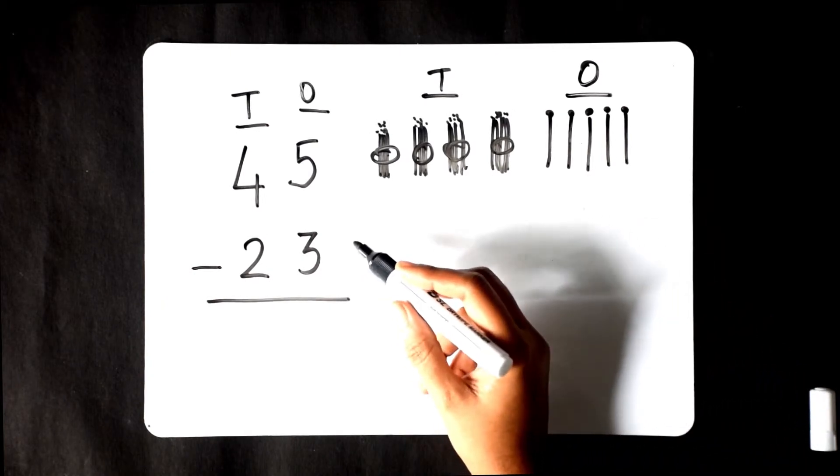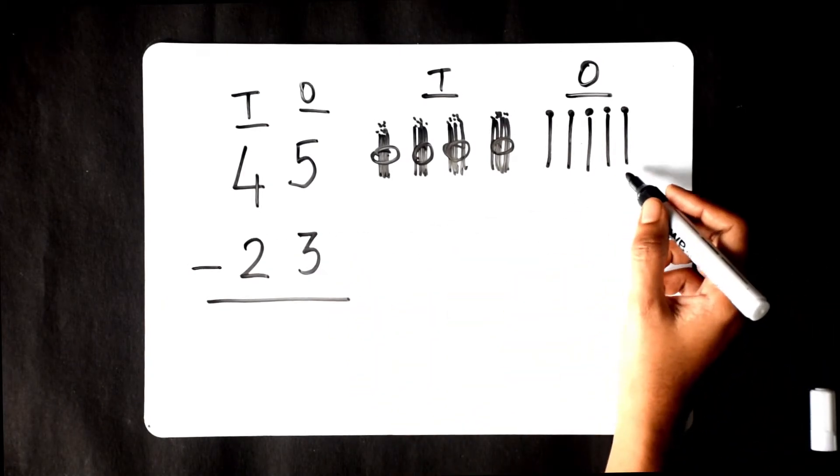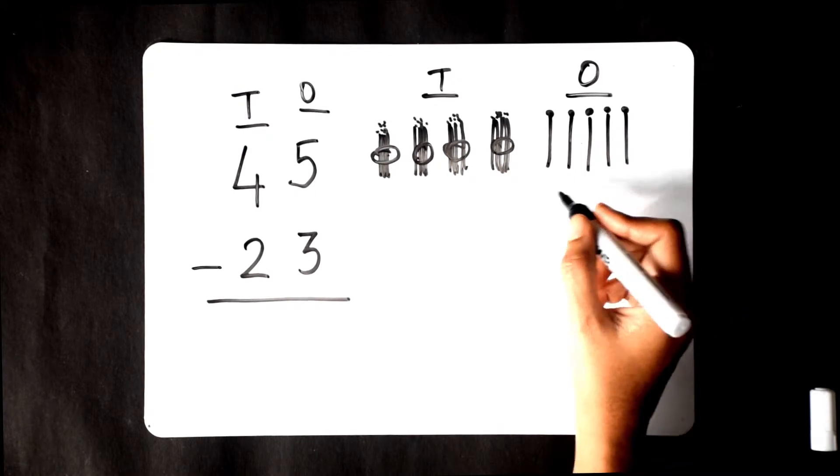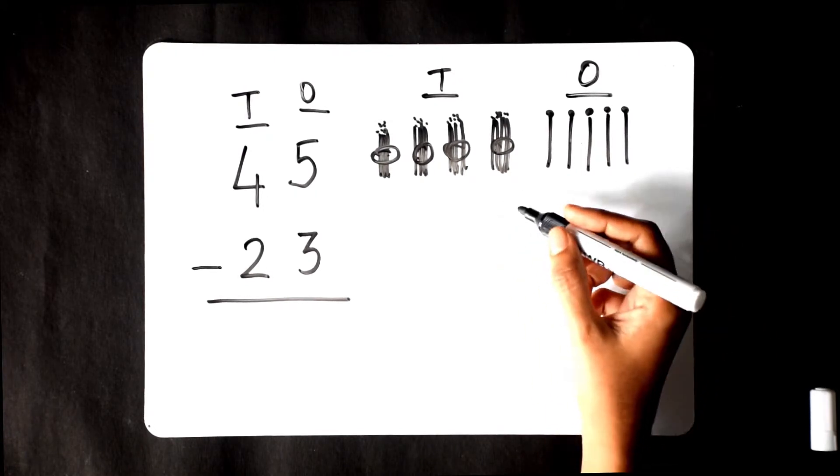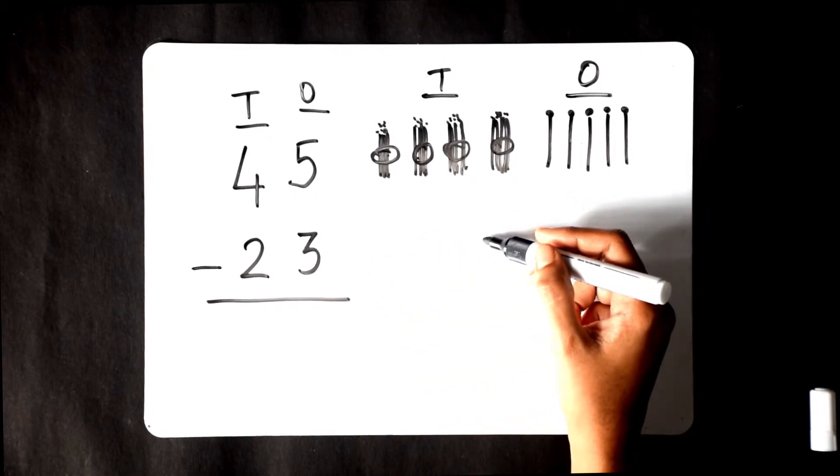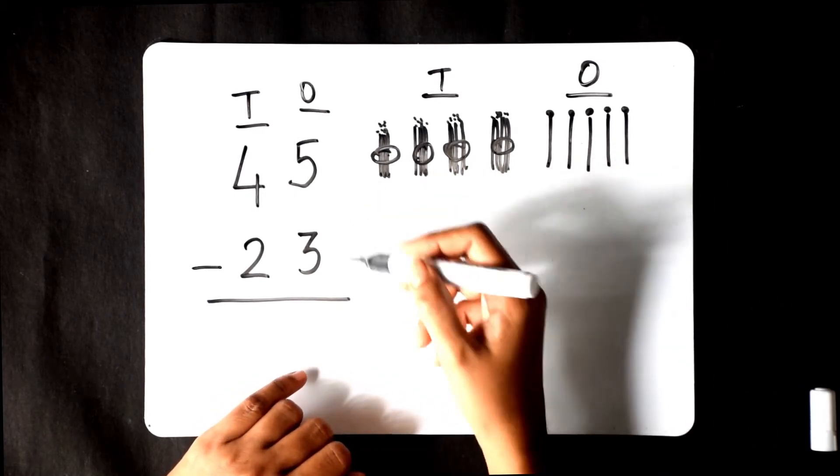As we said, subtraction means taking away. We are going to take away some ones and tens from these numbers. We need not represent 23 using pictures. Let's start taking away.